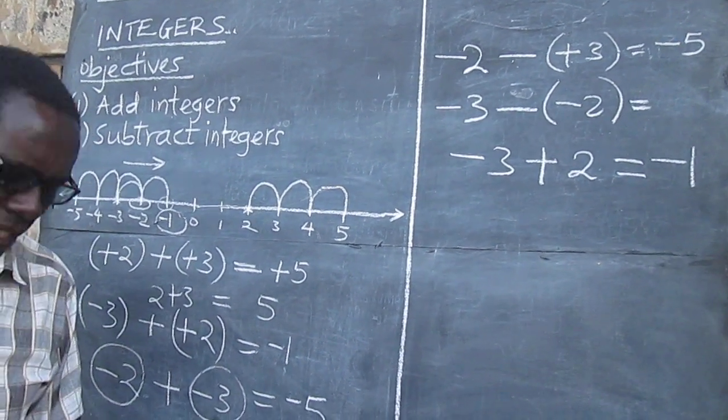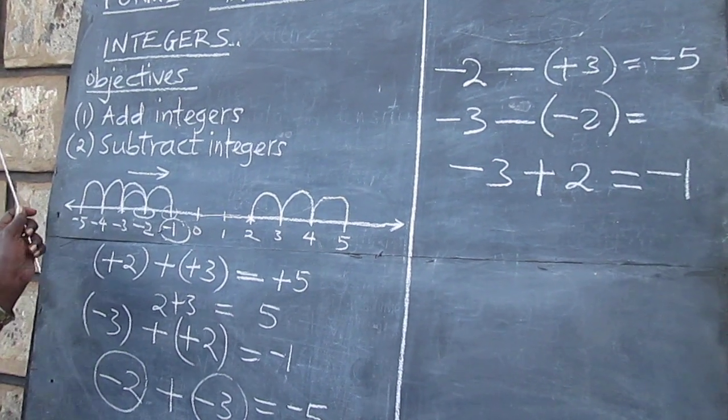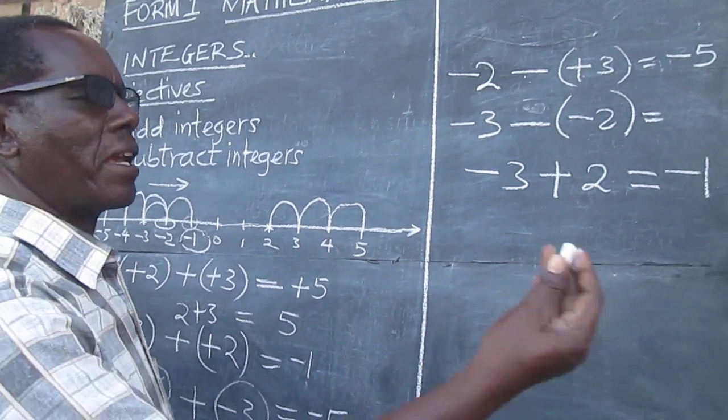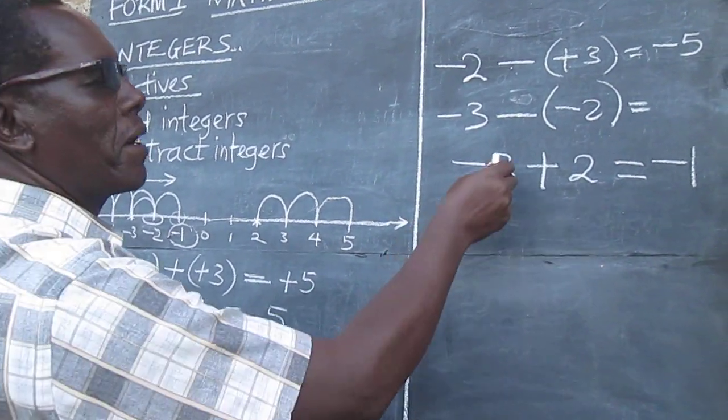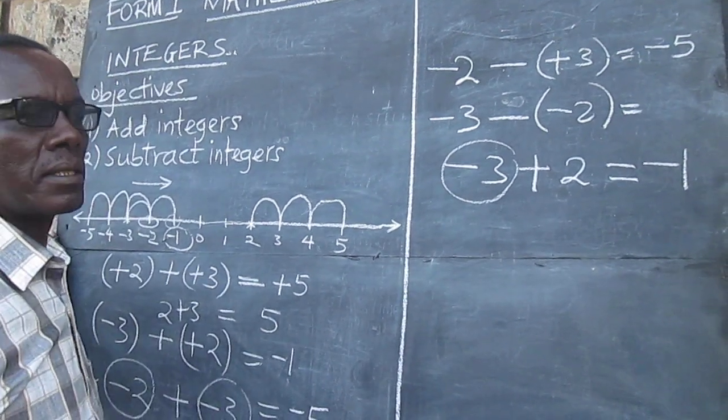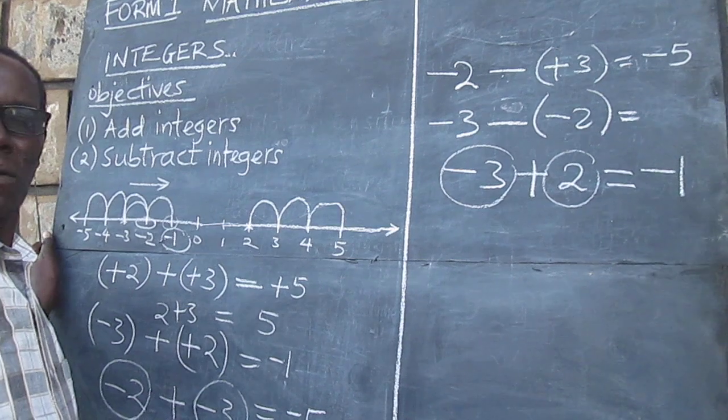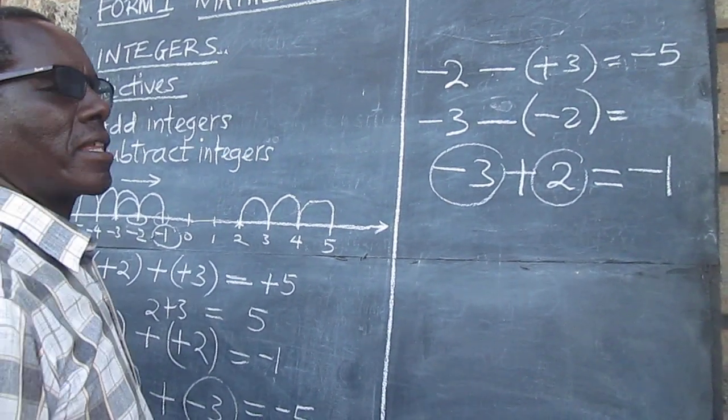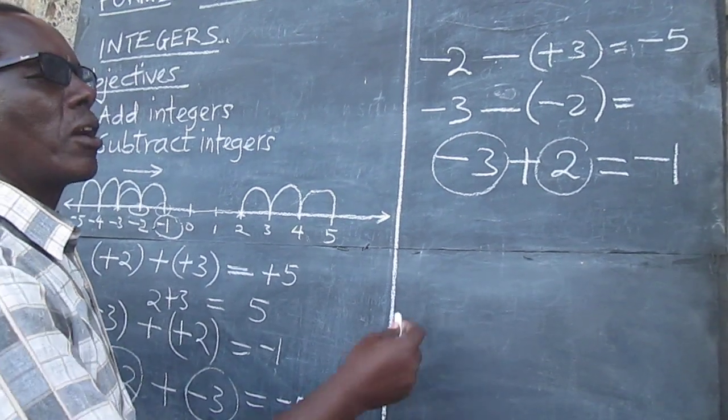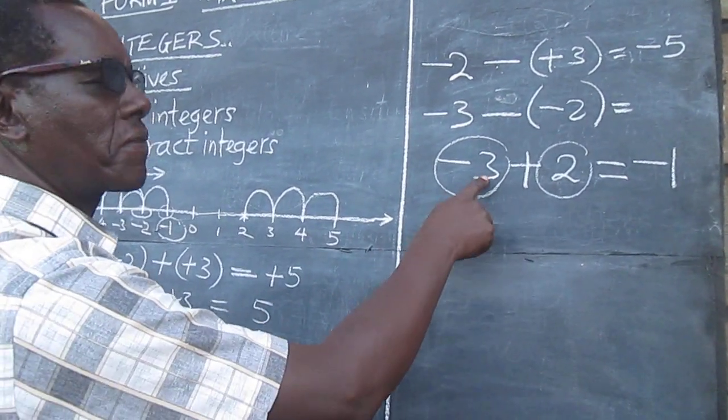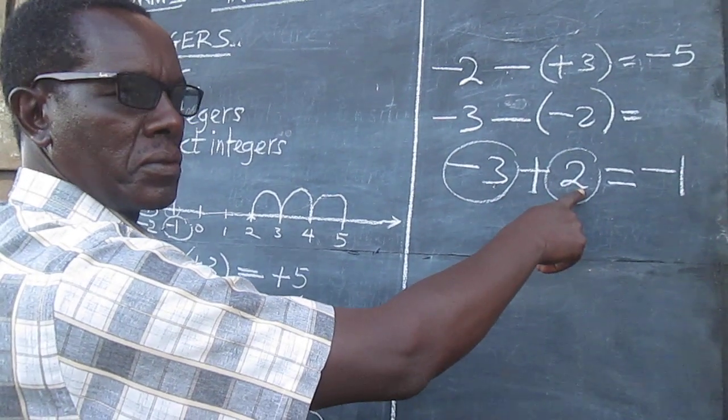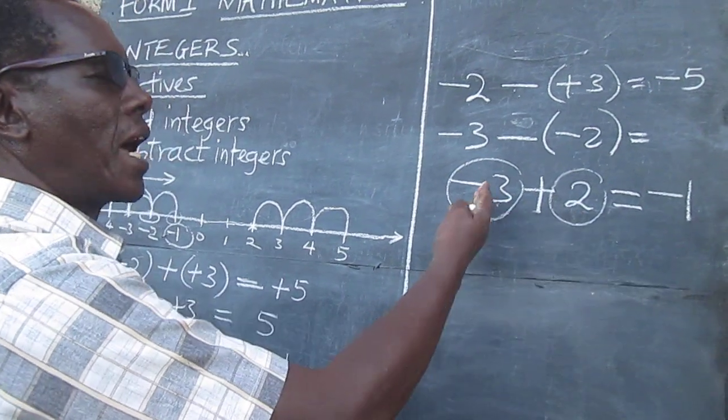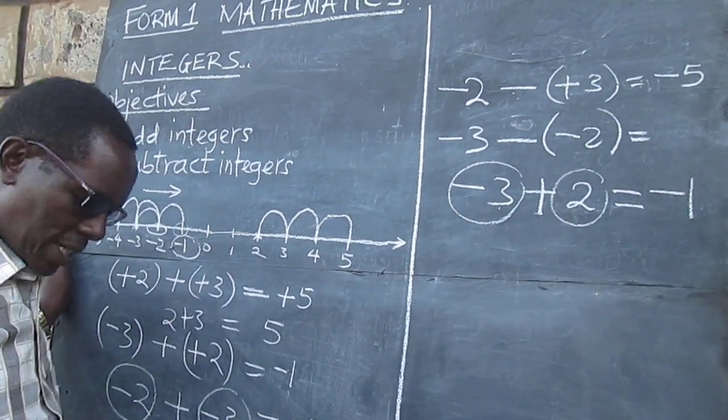We can look at further examples on this one, but we don't always have to use the number line. So, some things are very clear, that whenever, for example, from the working, whenever we are adding a negative number to a positive number, the result is clearly the difference between the two numbers, but then the result will have the sign of the bigger, of the larger number. So, negative 3 plus positive 2. All we need to do is take 3, subtract 2, and then assign the sign of the bigger number. So, that can be applied in any question.